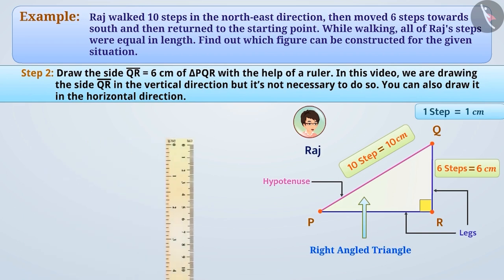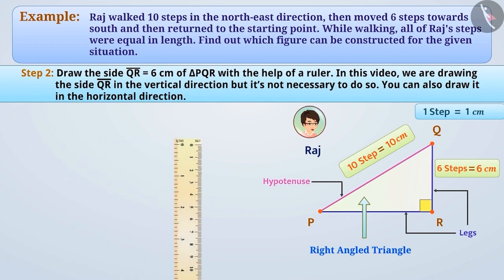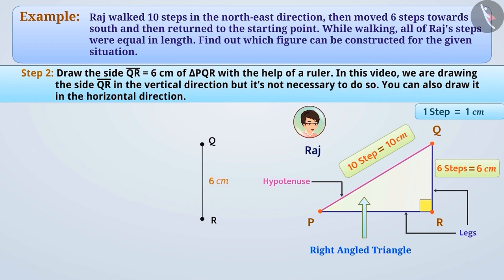Step 2: Now, with the help of a ruler, we will draw side QR of length 6 cm, the same measurement as in triangle PQR. In this video, we are drawing side QR in the vertical direction, but it is not necessary to do so — you can also draw it in the horizontal direction.